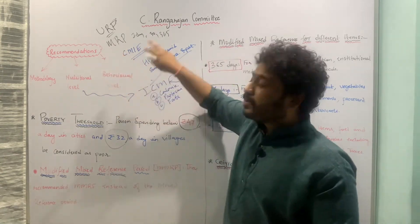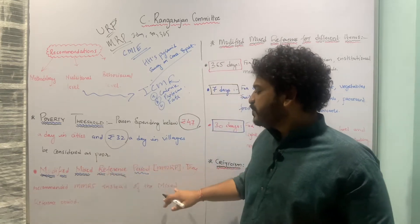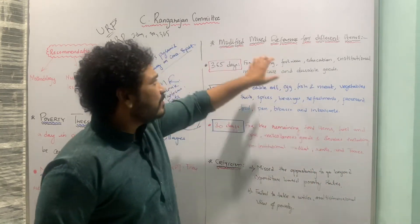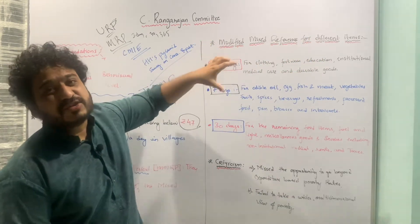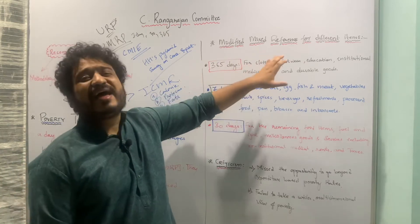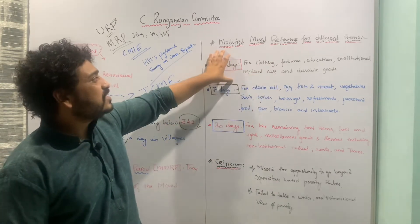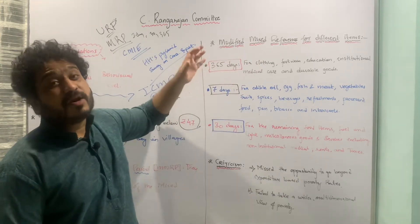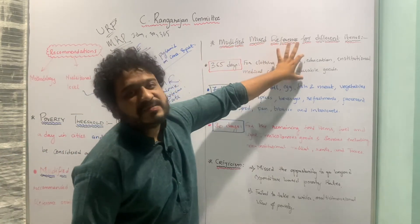The Rangarajan Committee modified this mixed reference period and called it the Modified Mixed Reference Period (MMRP). Let us look at what this looks like for different commodity baskets. Under the 365-day recall period, the committee included: clothing, footwear, education, institutional medical care, and durable goods. These commodities are captured when recalling consumption over the past 365 days.